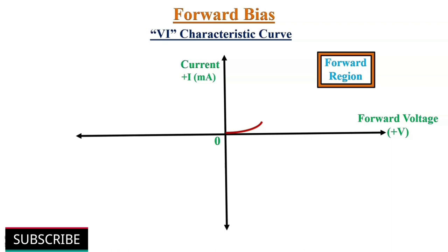Once the applied voltage is greater than the potential barrier, the p-n junction acts like an ordinary conductor. Hence, the current increases very sharply with the increase in applied voltage. The curve is almost linear. The voltage at which sudden increase in current takes place is called knee voltage or cut-in voltage. In case of silicon diodes, knee voltage is 0.7 volts.